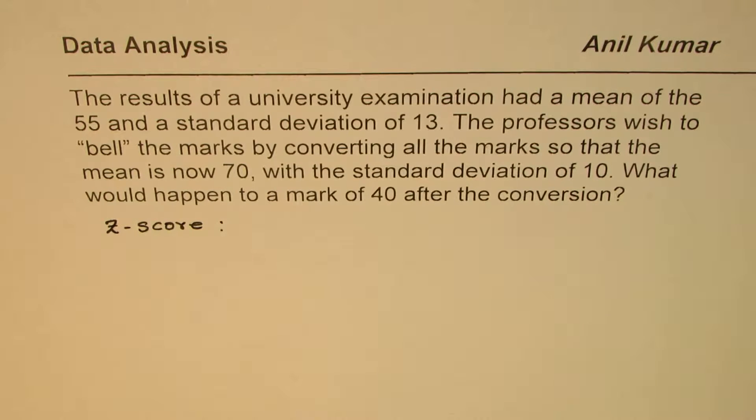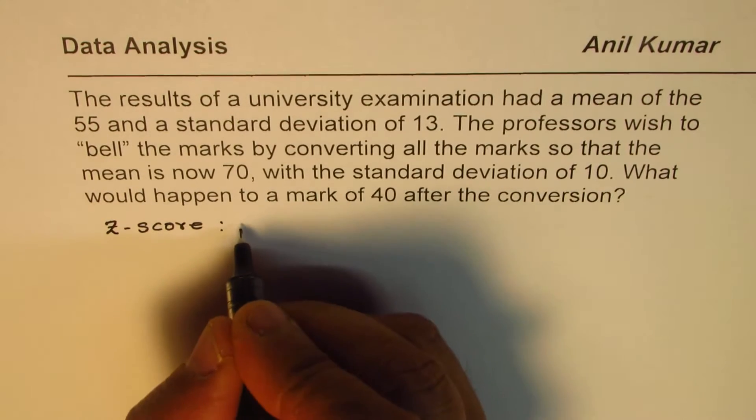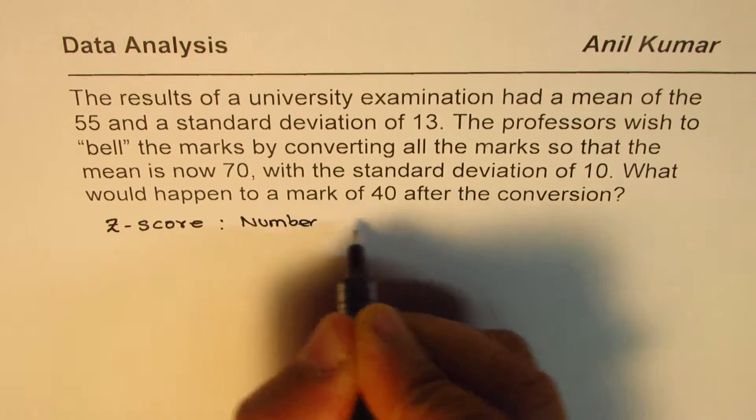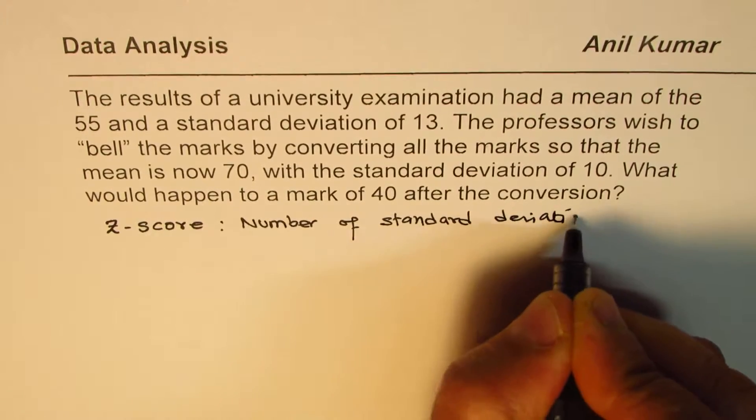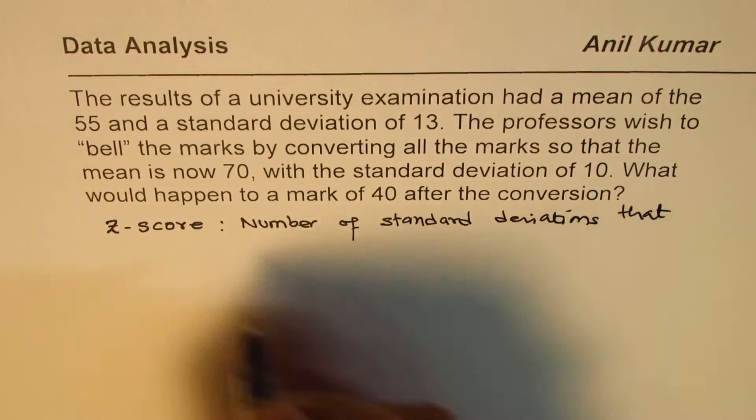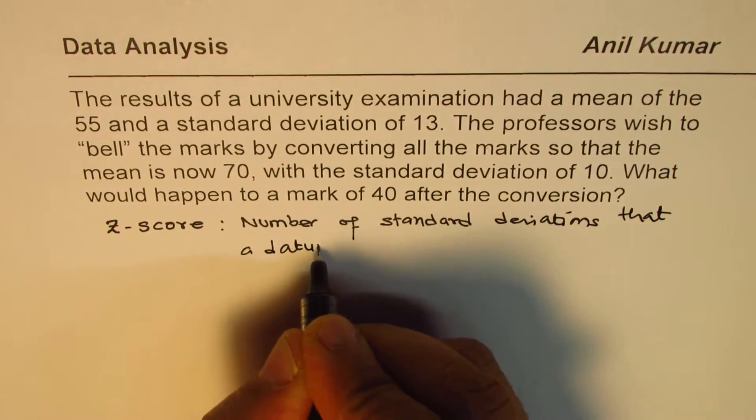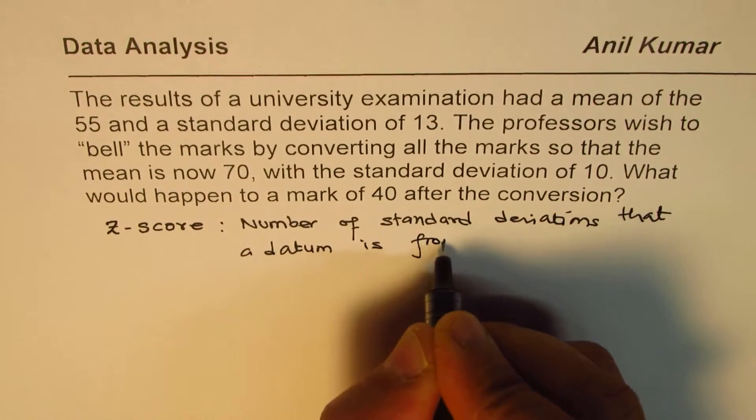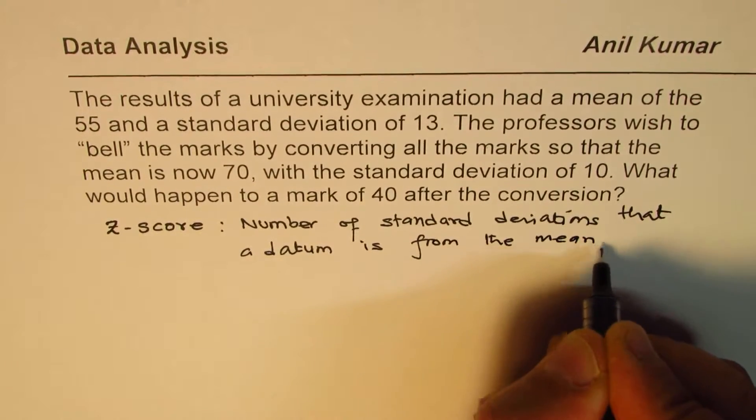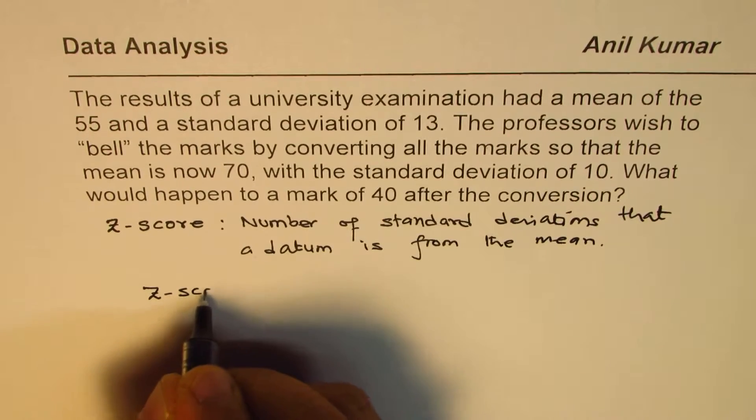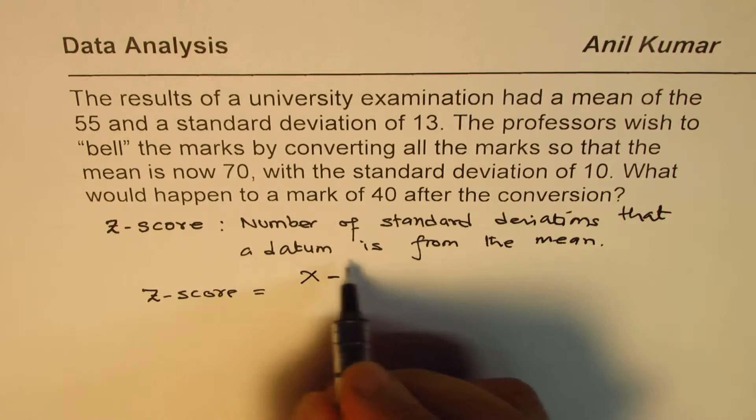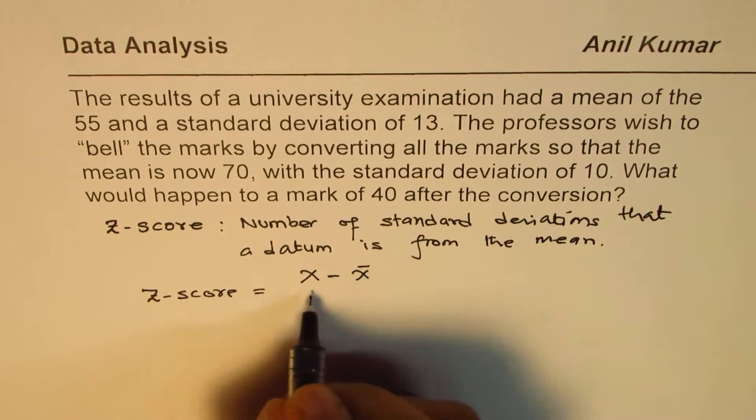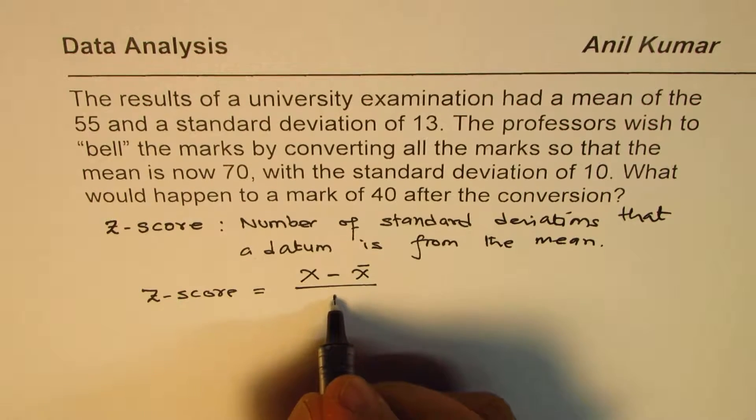Well, z-score is the number of standard deviations that a datum is from the mean. So mathematically we could write z-score as, if the data is represented by x and mean is represented by x bar, divided by the standard deviation.